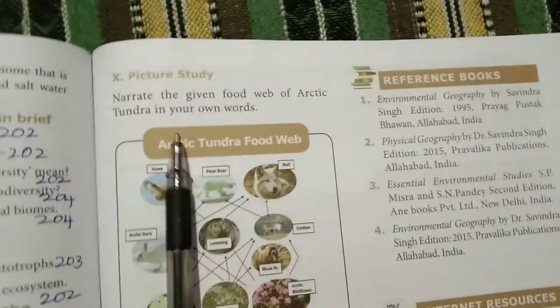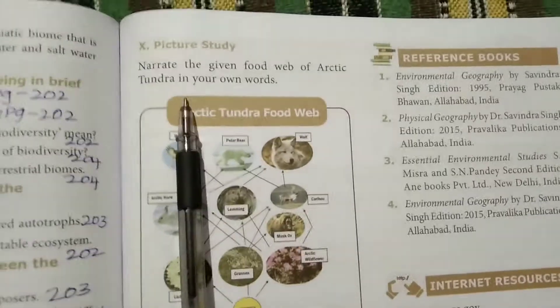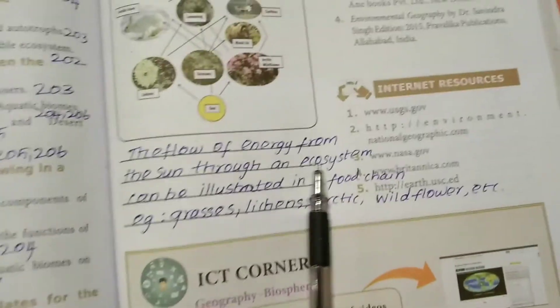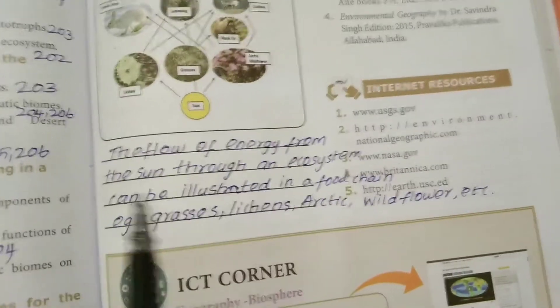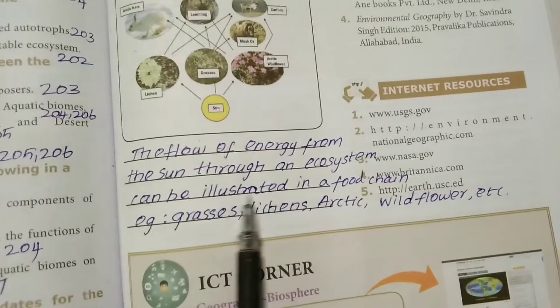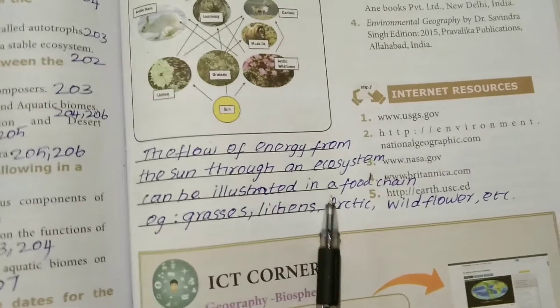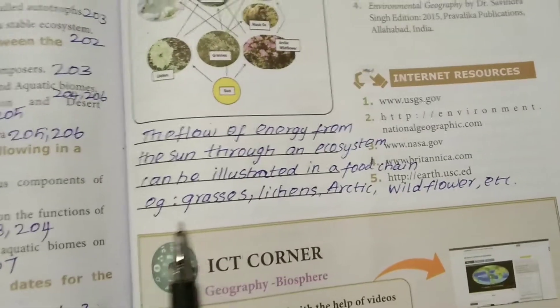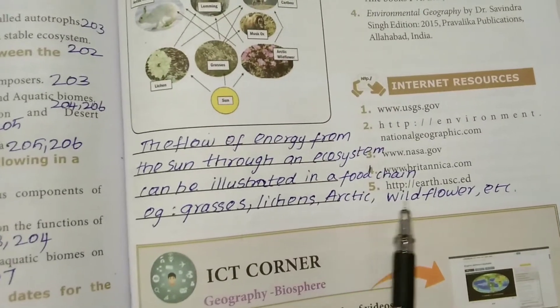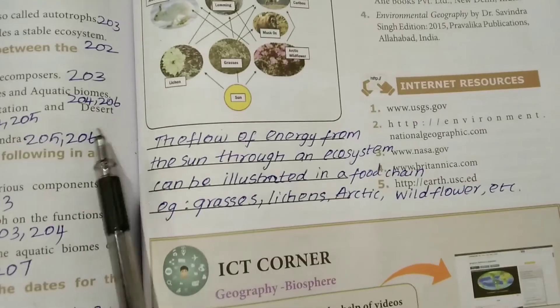Picture Study: the flow of energy from the sun through an ecosystem can be illustrated in a food chain. Examples include grasses, lynx, aquatic plants, white flowers, etc.